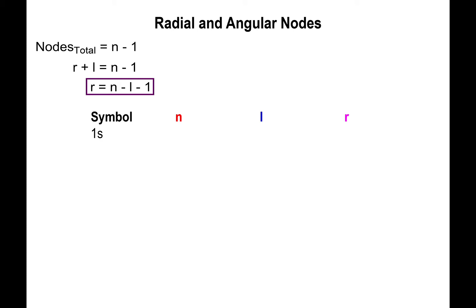For the 1s orbital, n = 1 and l = 0 because s orbitals have l = 0. Plugging into the equation: 1 - 0 - 1 = 0. This says the 1s orbital contains no angular and no radial nodes — it's the orbital that is fully symmetrical and spherical in shape.